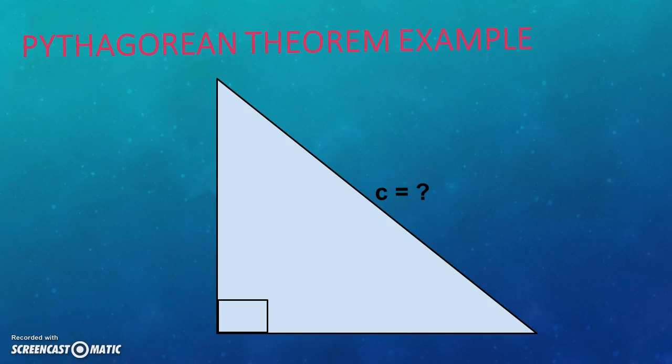Now, we will discuss an example of Pythagorean theorem. Given this right triangle where the length of perpendicular equals three units and base equals four units, we will calculate the length of hypotenuse using Pythagorean theorem.